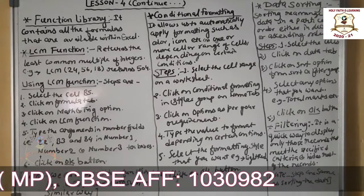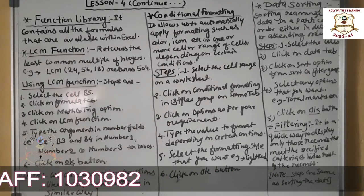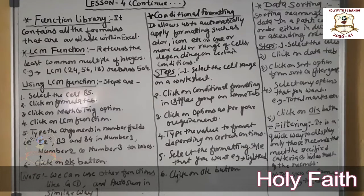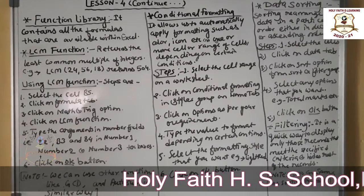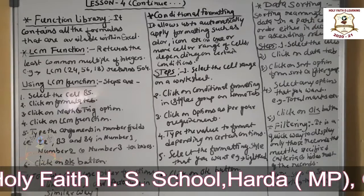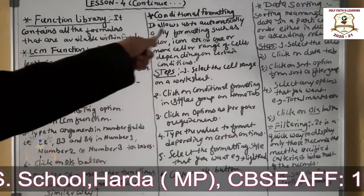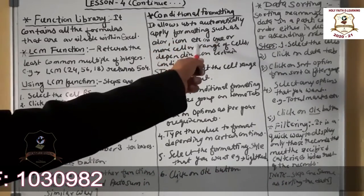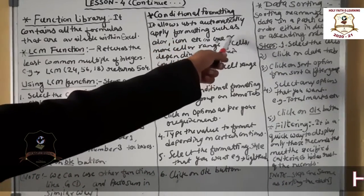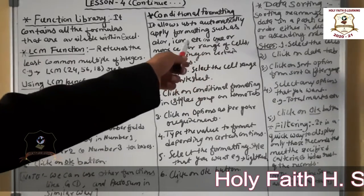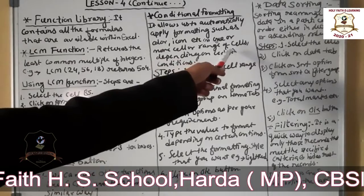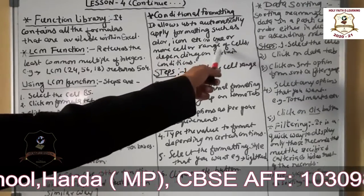The next topic is conditional formatting. What is conditional formatting? It allows you to automatically apply formatting such as color, icons, etc. on one or more cells or range of the cells depending on the certain condition.